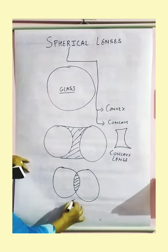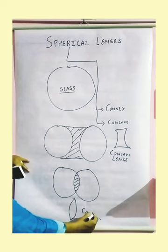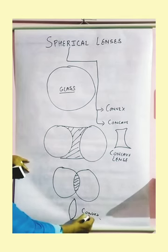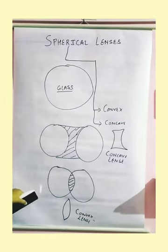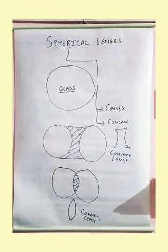This shape is called your convex, convex lens. This shape is called your convex lens. Now, convex lens is called the converging lens and concave lens is called your diverging lens.